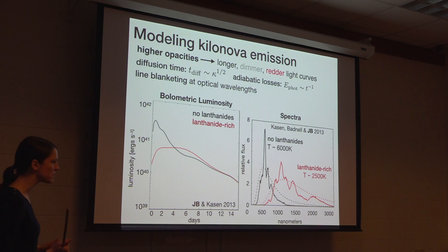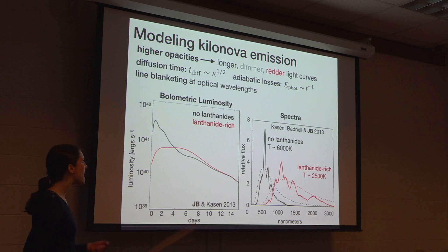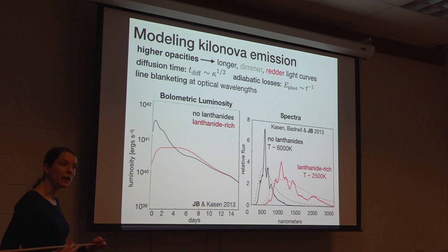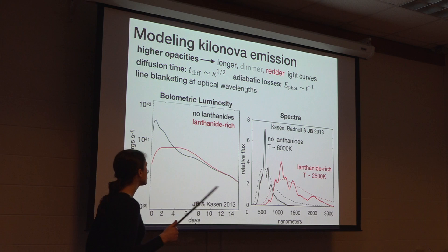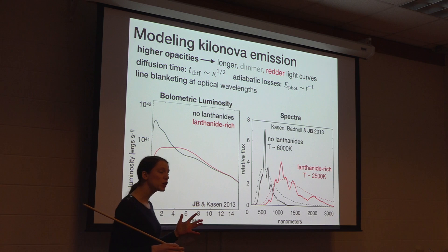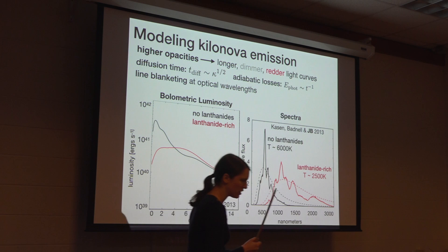There's just some simple physical reasoning that underlies the trends we see here. As you increase the opacity, it makes it harder for the photons to diffuse out of the ejecta, which explains the lengthening of the light curve. By the time the photons are able to escape the ejecta, they've lost more of their energy to adiabatic expansion, which causes the peak luminosity to decrease. This adiabatic cooling, combined with very high opacity at optical wavelengths, pushes the emission out into the infrared. So the more lanthanides and actinides you have in your ejecta, the longer, dimmer, and redder the emission of your kilonova is going to be.